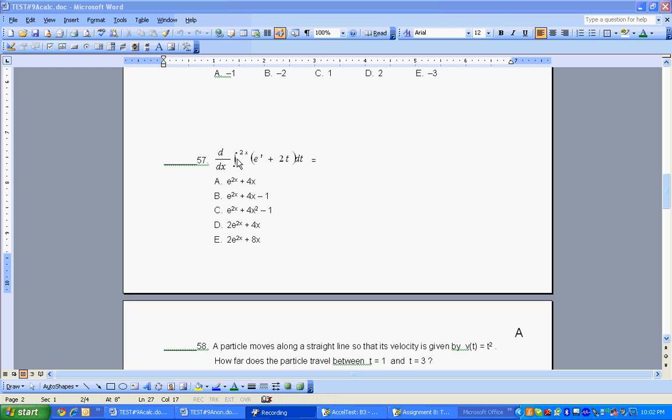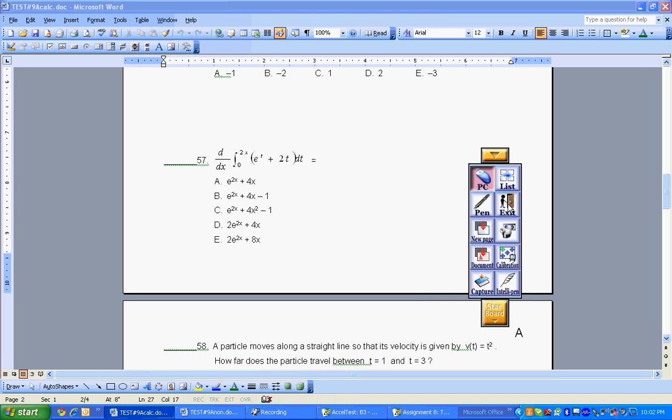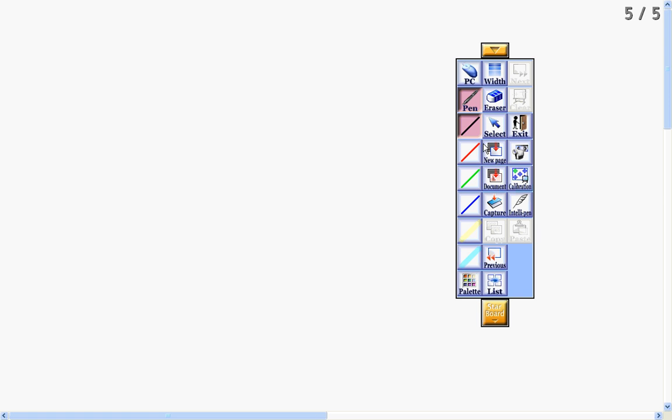That means we're getting rid of the integral sign and we're basically just looking at the function e to the t plus 2t dt, that function. So I've already worked it out for the sake of time because I'm on the notepad and it's kind of slow, so I'll just be following along from the work that I've already done.